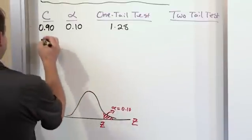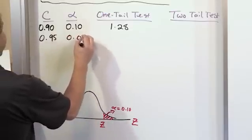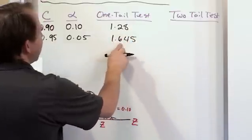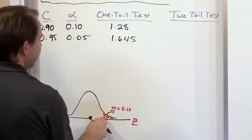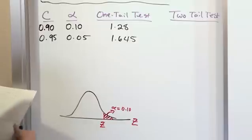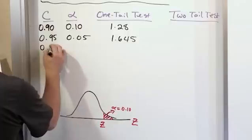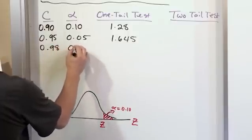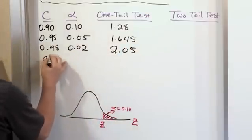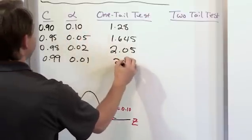For 0.95 confidence (95%), alpha is 0.05 and the one tail test Z value is 1.645. For 0.98 confidence, alpha is 0.02 and the one tail Z value is 2.05. And for 0.99 confidence (99%), the significance level is 0.01 and the one tail Z value is 2.33.